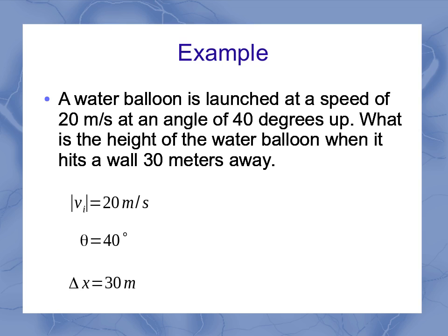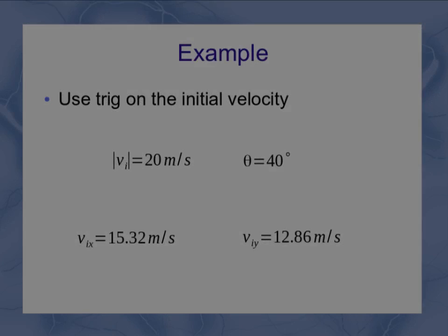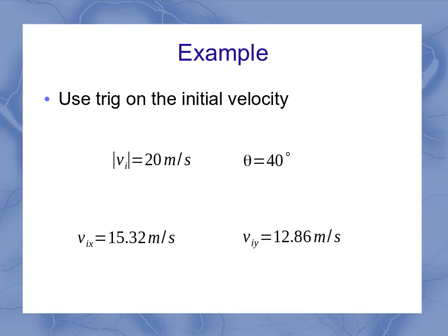And that 30 meters is the delta x, because when we measure how far a wall is, we're measuring the horizontal distance. And the height that I'm measuring, that's the delta y. That's what I'm trying to solve for. Now we need to use trig on that initial velocity, because we need the components. So you'll work this out using your normal trig relationships. And you can double check these calculations for yourself.